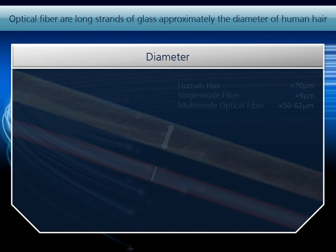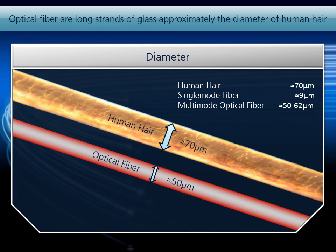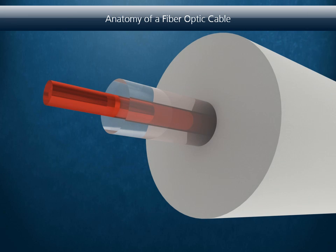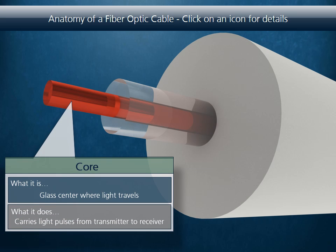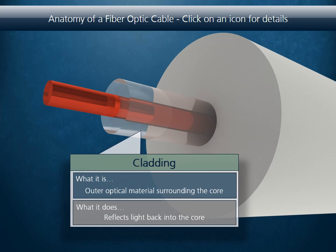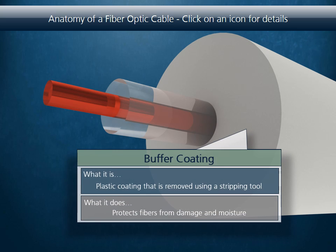Optical fibers are long strands of glass approximately the diameter of a human hair. When arranged in bundles called optical cables, they can transmit light signals over long distances. Although small, the anatomy of a fiber optic cable is fairly complex. Let's take a look at the three main components. The core is the glass center that carries the light pulses from the transmitter to the receiver. The material surrounding the core is called cladding — it reflects light back into the core. And finally, the buffer coating is the outer coating that is removed using a stripping tool, protecting the fibers from damage and moisture.